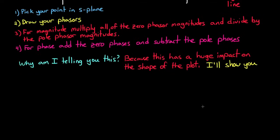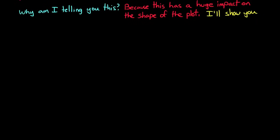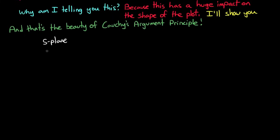And that is really all you need to know for Cauchy's argument principle, that you can tell the relative difference between the number of poles and zeros inside of a contour by how many times the plot circles the origin and in which direction.